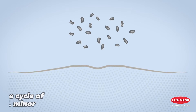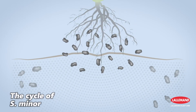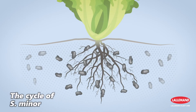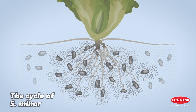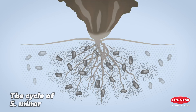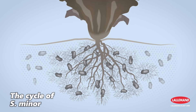Sclerotinia minor is a dominant species in vegetable crops such as lettuces. This pathogen does not usually produce apothecia and is limited to primary contamination at the root level, causing progressive invasion of the crown and wilting of the plants.